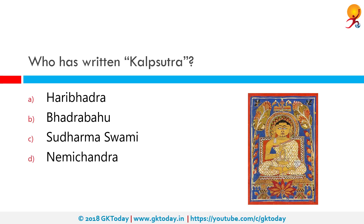Who has written the Kalpa Sutra? The Kalpa Sutra is a Jain text containing the biographies of Jain Tirthankaras, most notably Parshvanath and Mahavira, including the latter's Nirvana. The author of this text is Bhadrabahu.